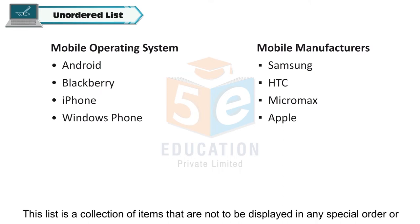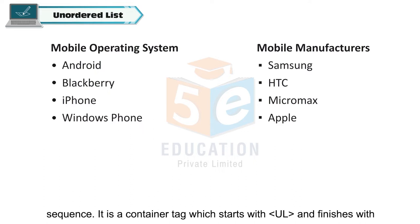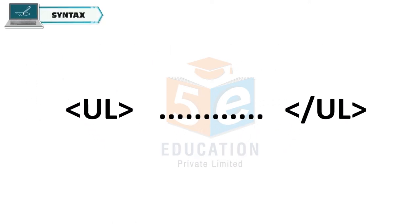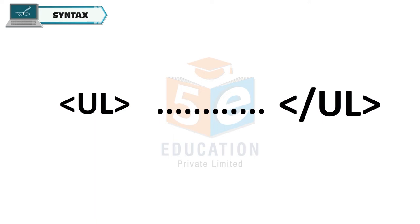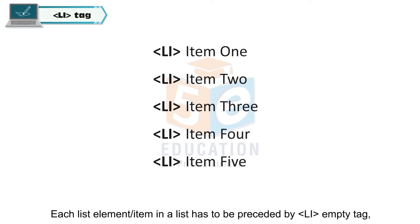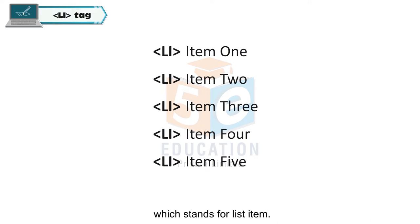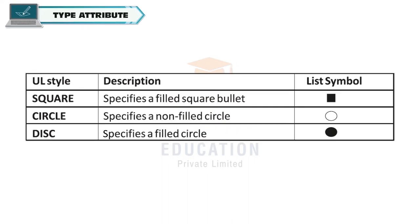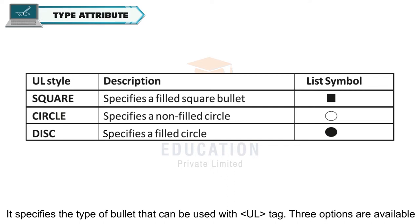Unordered list: This list is a collection of items that are not to be displayed in any special order or sequence. It is a container tag which starts with the opening ul tag and finishes with the closing ul tag. By default, its contents are shown using a small bullet icon, but this style can be changed. Each list element or item has to be preceded by the li empty tag, which stands for list item. Syntax: opening ul tag, li tag, item name, closing ul tag.